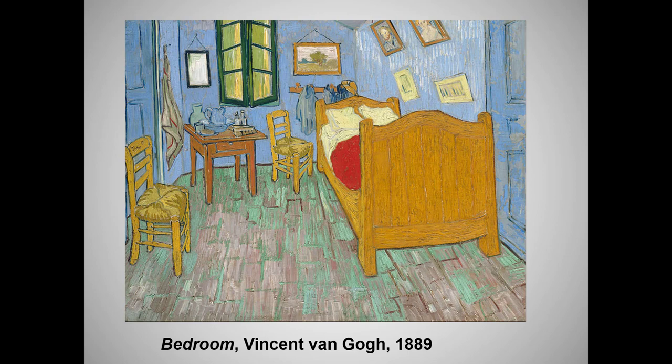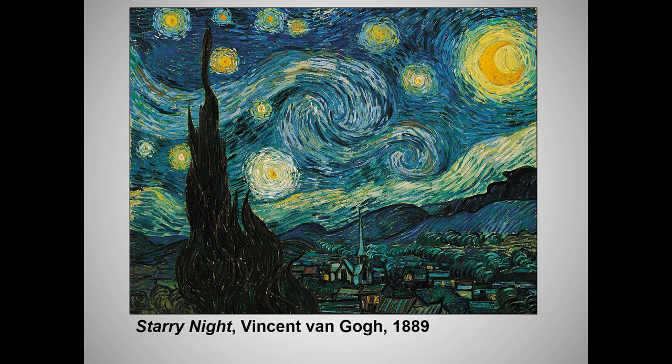Van Gogh explained that he deliberately chose the colors in his painting of the bedroom at Arles to convey serenity and peaceful retreat, though again the perspective is rather off. And here is probably Van Gogh's most famous required work, Starry Night, produced as he struggled with depression and fits of delusion. Van Gogh painted Starry Night in an asylum where he had committed himself.